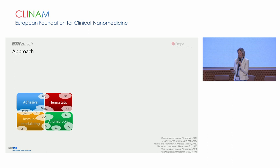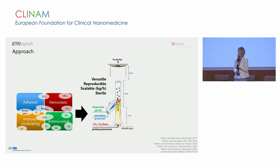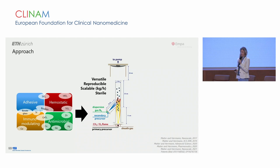We identified bioglass and cerium oxide as two compounds that are particularly promising because they give us adhesive properties, hemostatic properties, immunomodulating properties, and antimicrobial properties. We synthesized particles based on these materials in a flame spray synthesis process — a simple, one-step, continuous process that allows us to create different architectures. It's very versatile, reproducible, and sterile.